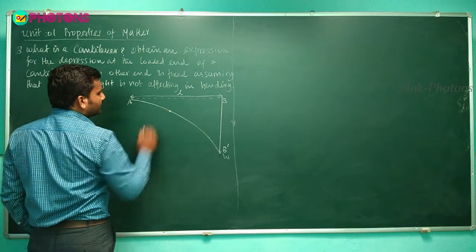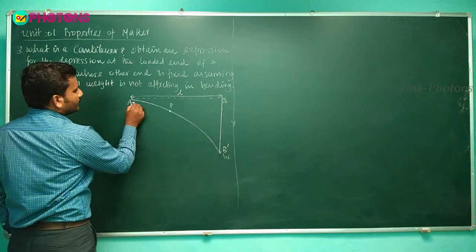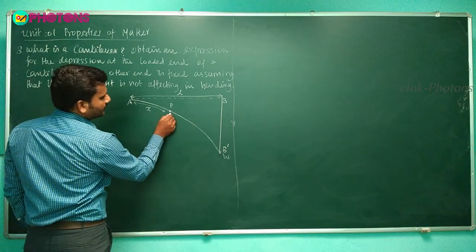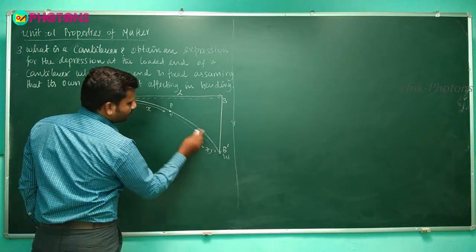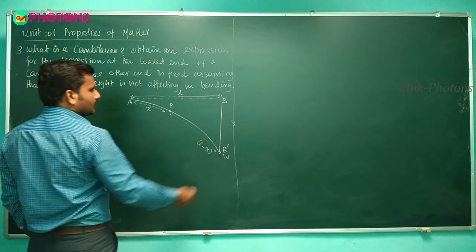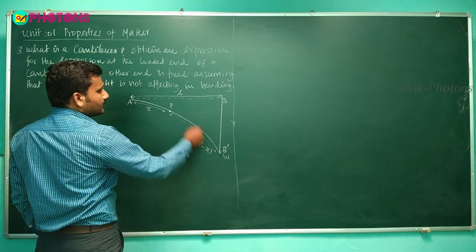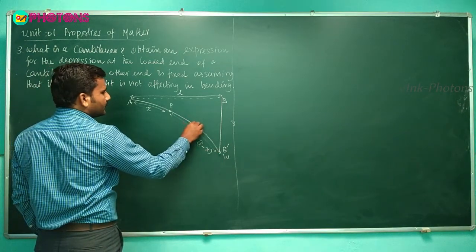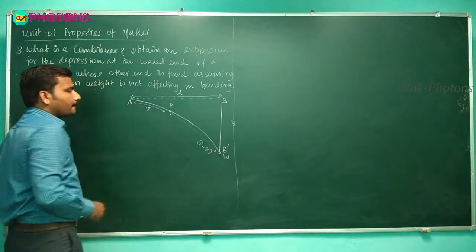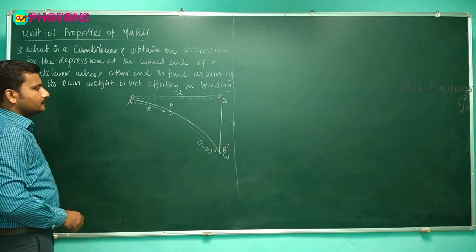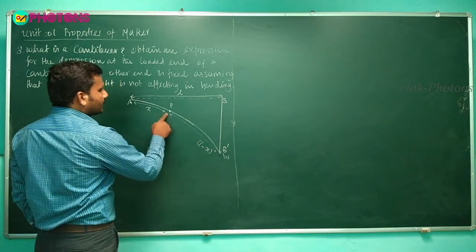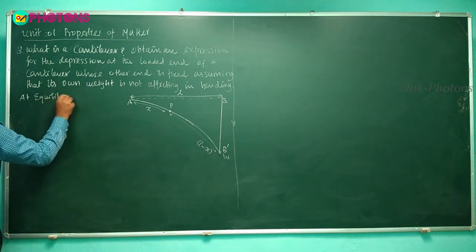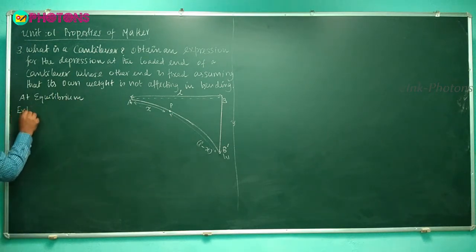Consider a point P on the bent cantilever. This portion is x, so the remaining portion is l minus x. For the application of force, there exists an external bending moment, and because of this, the material experiences an internal bending moment at point P. At equilibrium, the external bending moment equals the internal bending moment.